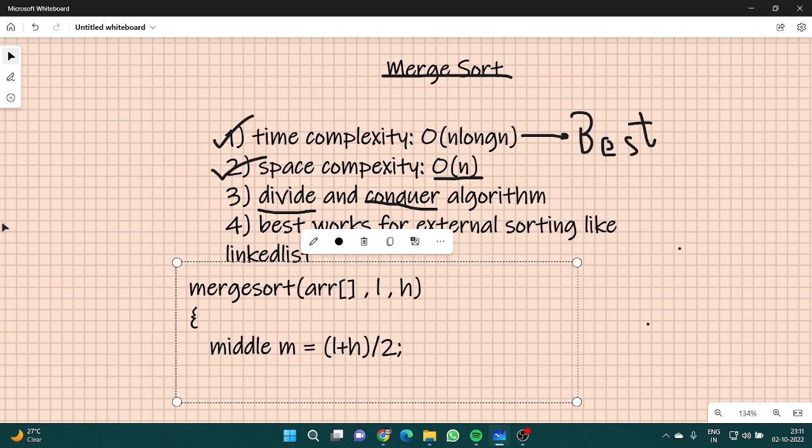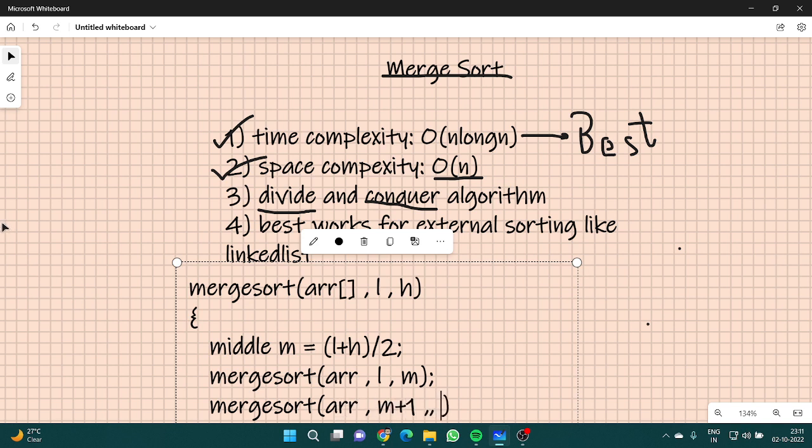Now we'll again call the merge sort on the first half. How we'll do that? We'll call the merge sort on the first half by array, L, M. We'll call the merge sort on the right half: merge sort, array, M plus 1, H.